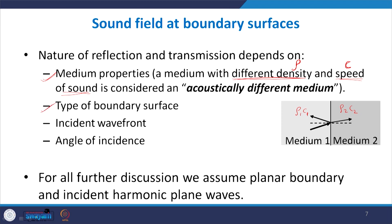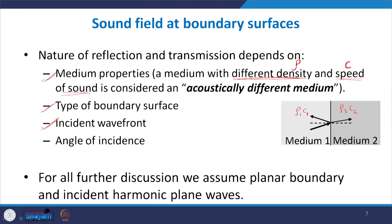The second property on which it depends is the kind of boundary surface — whether it is a planar boundary, an irregularly shaped boundary with sharp geometrical bends, or a perforated boundary. Third, it depends on the kind of wave front incident: whether it is a harmonic plane wave, a spherical wave, a cylindrical wave, or any general random noise determines the nature of reflected and transmitted waves.